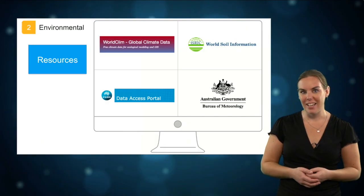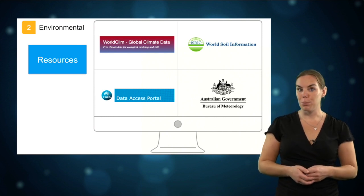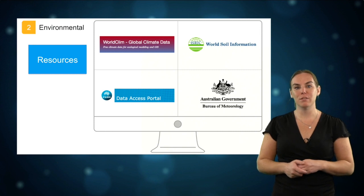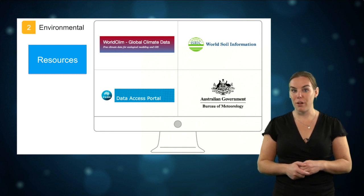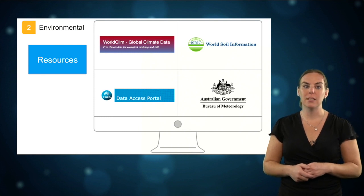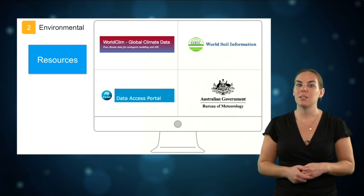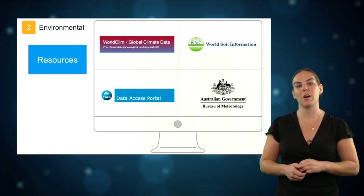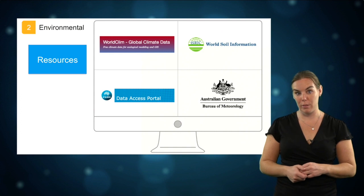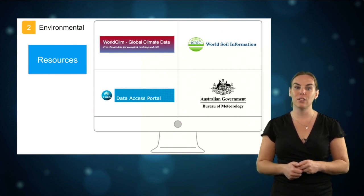As with species data, there are a lot of online resources available that provide environmental data. For example, WorldClim is a collection of global climate layers of current and future climate. There is also a soil database and there are also smaller scale national or regional databases. It's important to first think which environmental variables are likely to influence your species and then search for the environmental data sets that suit your species.